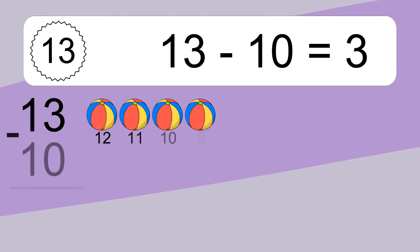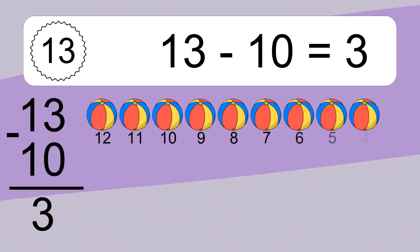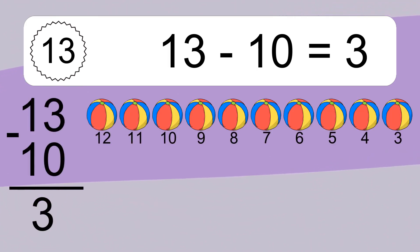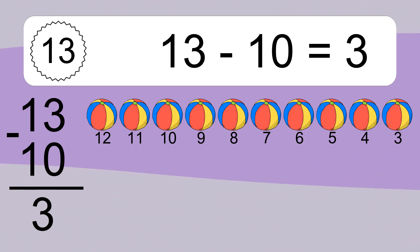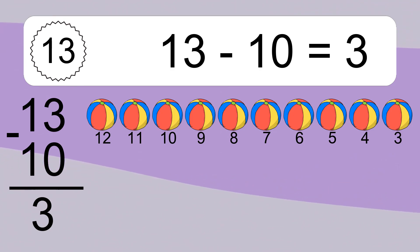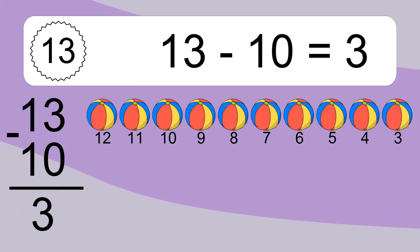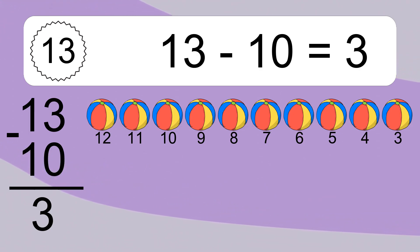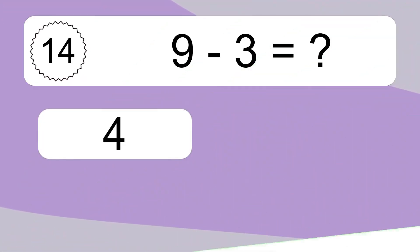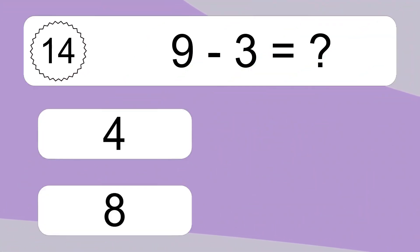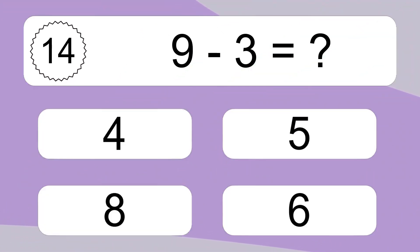13 minus 10 equals what? 13 minus 10 equals 3. Let's count it: 12, 11, 10, 9, 8, 7, 6, 5, 4, 3.